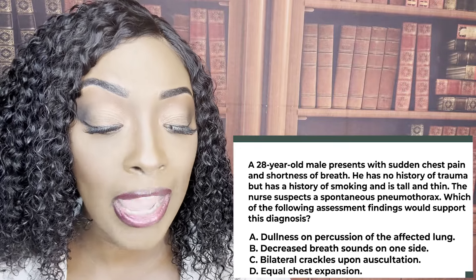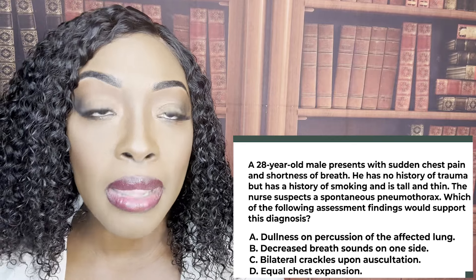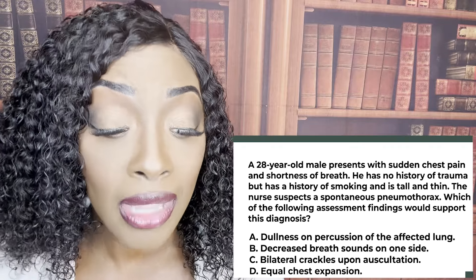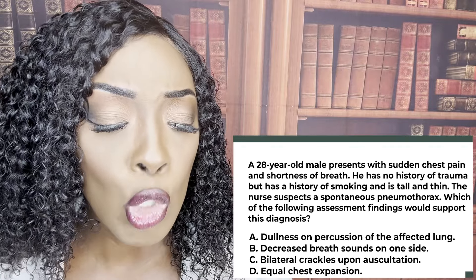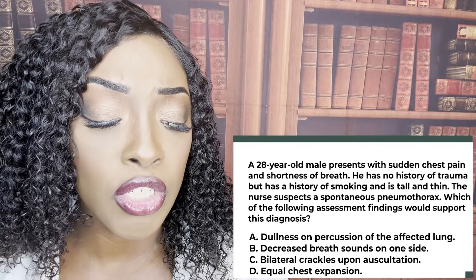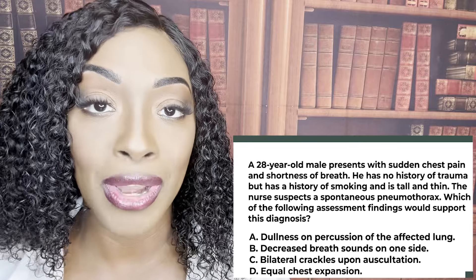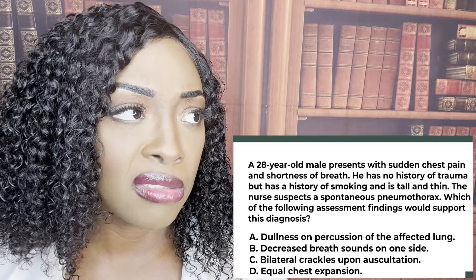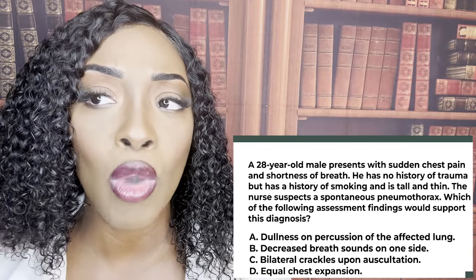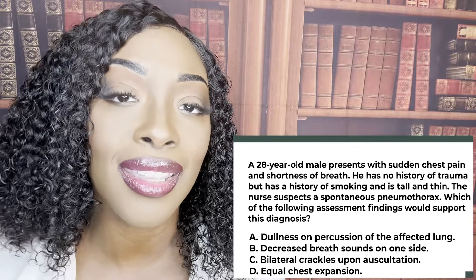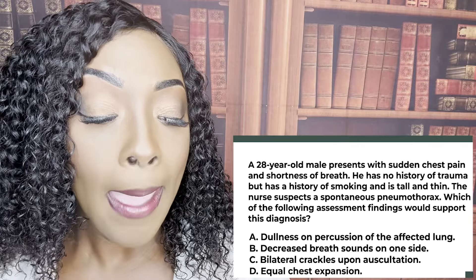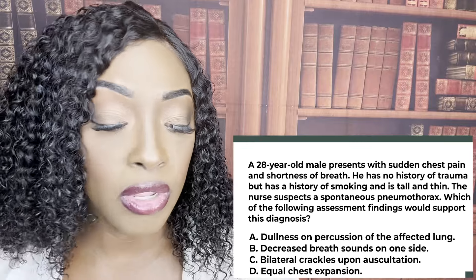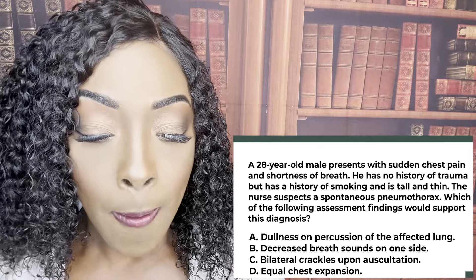Now the wrong answers: A, dullness on percussion of the affected lung — we see that in pleural effusion, atelectasis, or a mass. C, bilateral crackles upon auscultation — crackles tell you fluid is present. D, equal chest expansion — that's actually a good thing; we want symmetric bilateral expansion. So for spontaneous pneumothorax, B is correct. We expect decreased breath sounds, shortness of breath, and chest pain on that side.